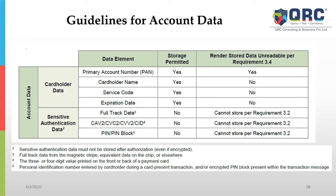This slide is particularly critical because your scope will be defined by what you are storing and what you are not storing. Sensitive authentication data cannot be stored even if encrypted, truncated, or hashed — in any manner. It can only be stored temporarily until authorization happens. Once your payment gateway, service provider, or bank reverts with authorization — whether the transaction failed or succeeded — you must drop the authentication data securely. If it is in memory, flush the variables; if it is on disk, securely delete and remove it so it is unrecoverable.